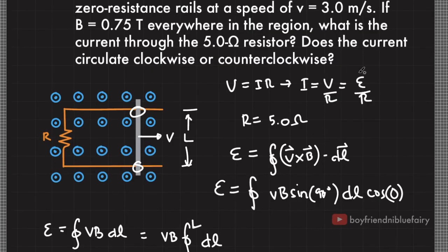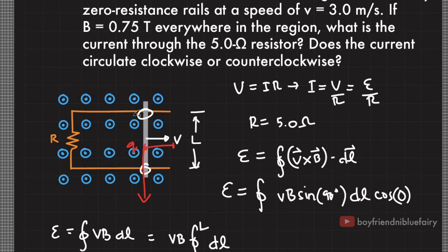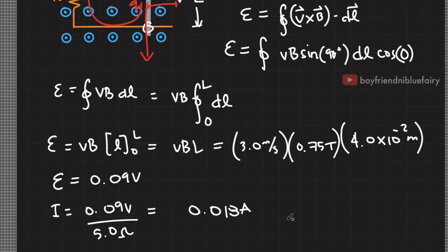Now the next question is, does the current circulate clockwise or counterclockwise? Based on the figure, if I focus on one single charge on the rod, for example this charge Q, since Q is moving with velocity V, then using the right-hand rule number 1, V cross B, it moves this way. If the positive charges are being pushed this way, and it will flow through these resistance-less rails, if we trace this path, it actually moves clockwise. So the answer here is clockwise.